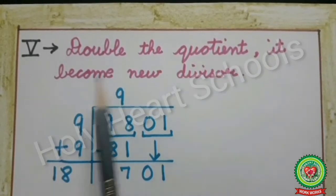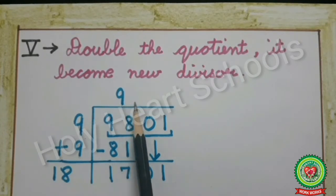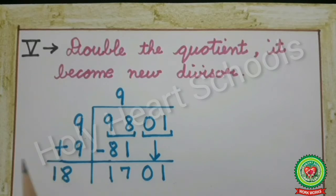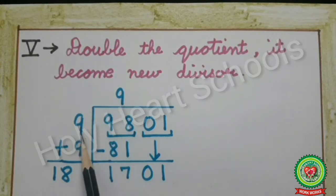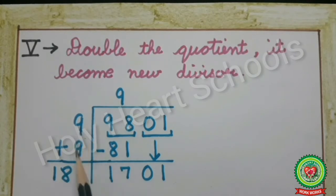The fifth step is to double the quotient — it becomes the new divisor. We can solve this step two ways. The first method is multiplying the quotient by 2: 9×2=18. The other way, which we will use in all steps, is adding the last digit of the quotient to the divisor. Our divisor is 9 and quotient digit is 9, so 9+9=18. Write 18 at the place of divisor, a little further from the line, because we have to write a digit there in the next step.